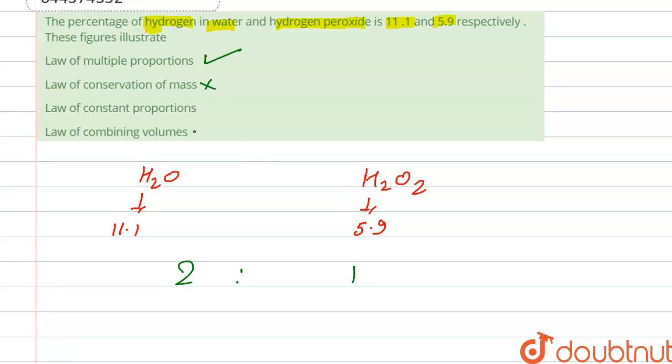Law of constant proportions: no data is given for constant proportions, so it is also wrong. Law of combining volumes: volume is also not given, so it is also wrong.